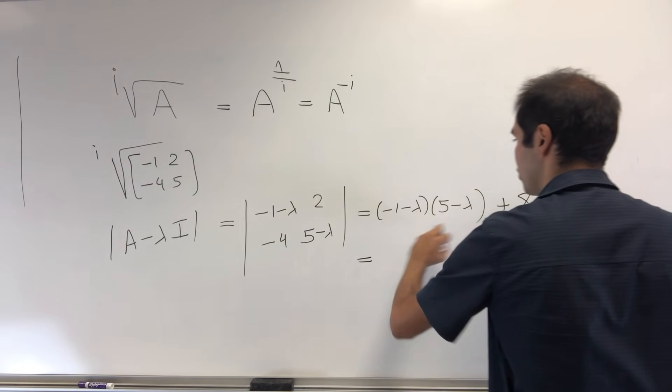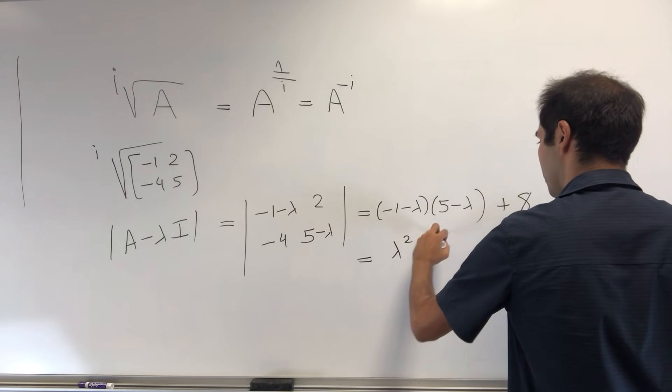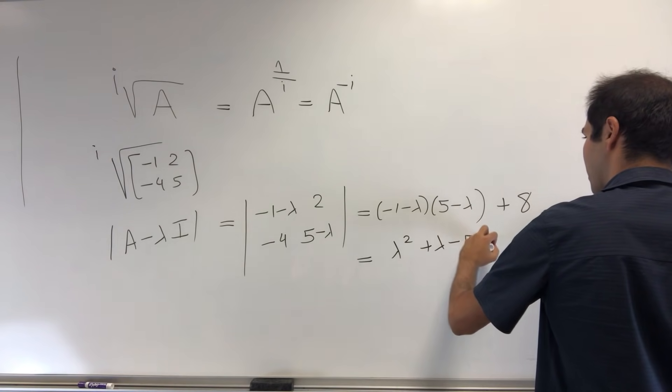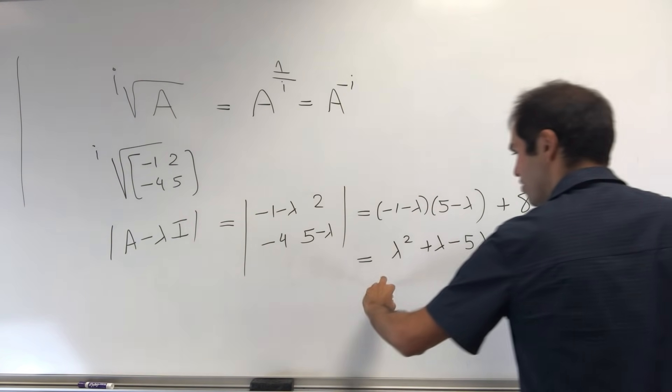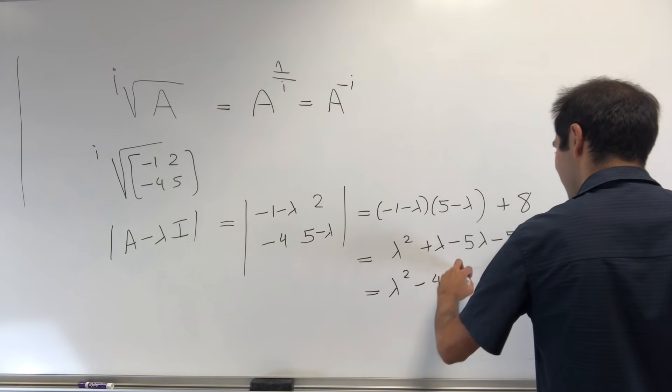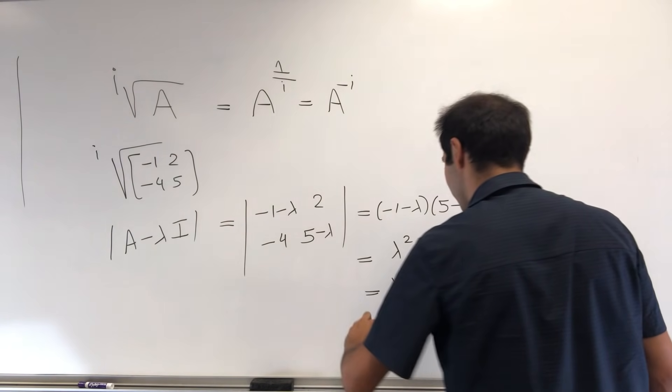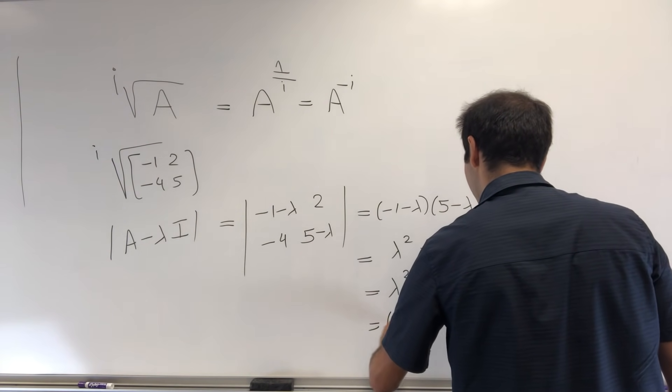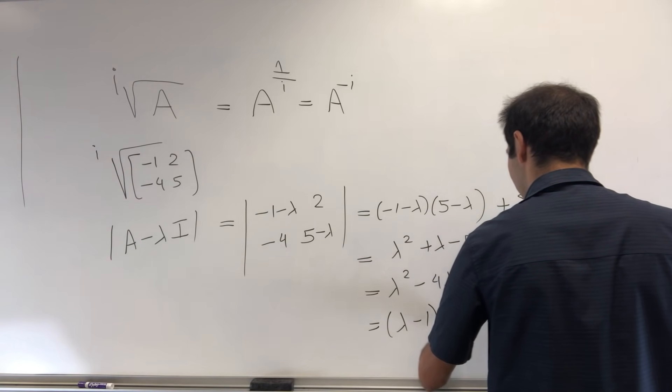And that gives you λ² + λ - 5λ - 5 + 8, which is λ² - 4λ + 3. And in the end, that gives us (λ - 1)(λ - 3).